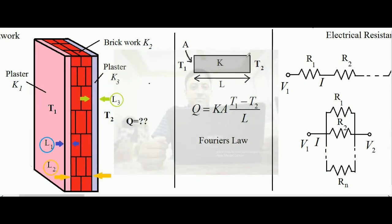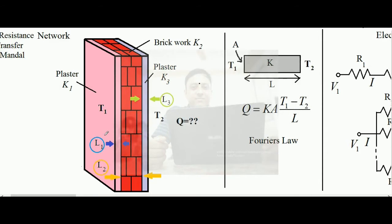We are applying temperature difference t1 on the left plaster face and t2 on the right plaster face, and we want to find the heat transfer rate. We know that for a single conductor of length l, cross-sectional area a, and thermal conductivity k with a temperature difference applied, Fourier's law gives q = k(T1 − T2)/l. But here we have three types of conductors connected in a particular combination, so how do we find the heat transfer rate?